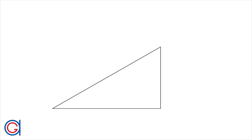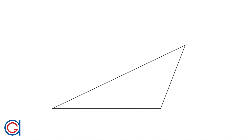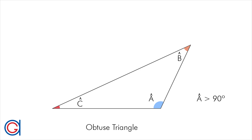We will continue the classification according to angles. So the next type of triangle is called an obtuse triangle, which means one of the three angles, in this case A, is greater than 90 degrees.